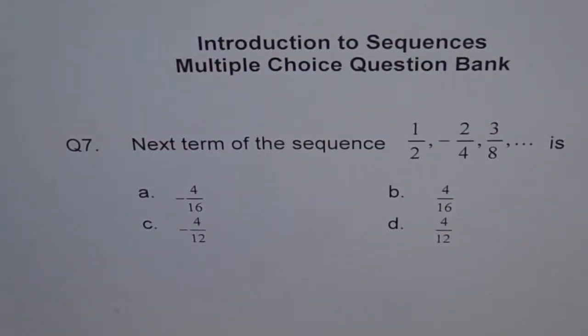Question 7 of introduction to sequences, multiple choice. Next term of the sequence, 1 over 2, minus 2 over 4, 3 over 8, is...